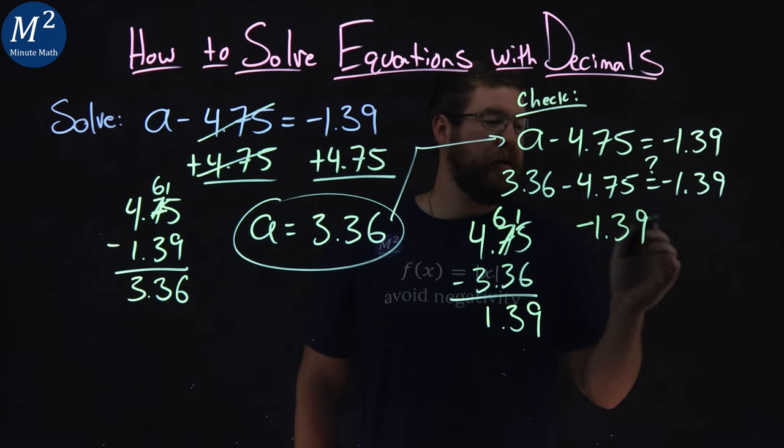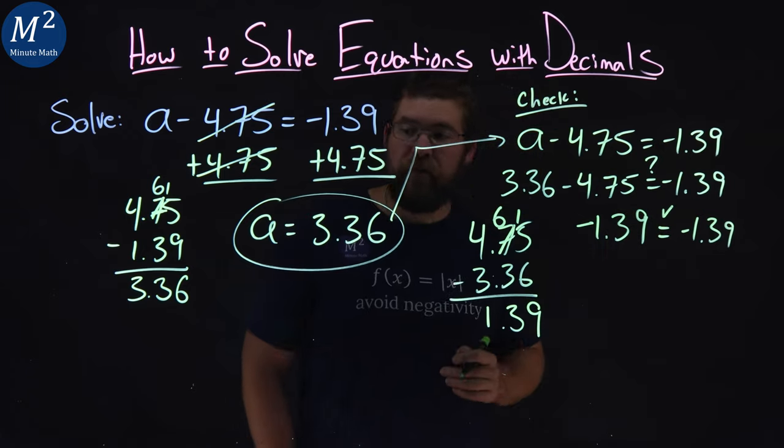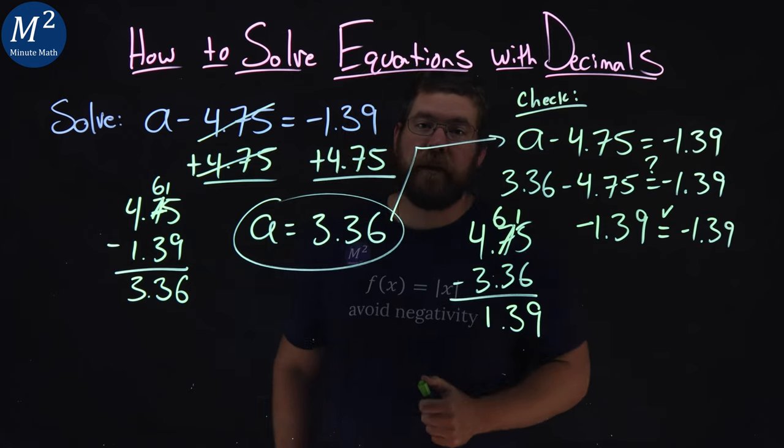Make sure we know that it's negative. And, is that equal to negative 1.39? Yes, it is. That check confirms that the solution to our equation is A equals 3.36.